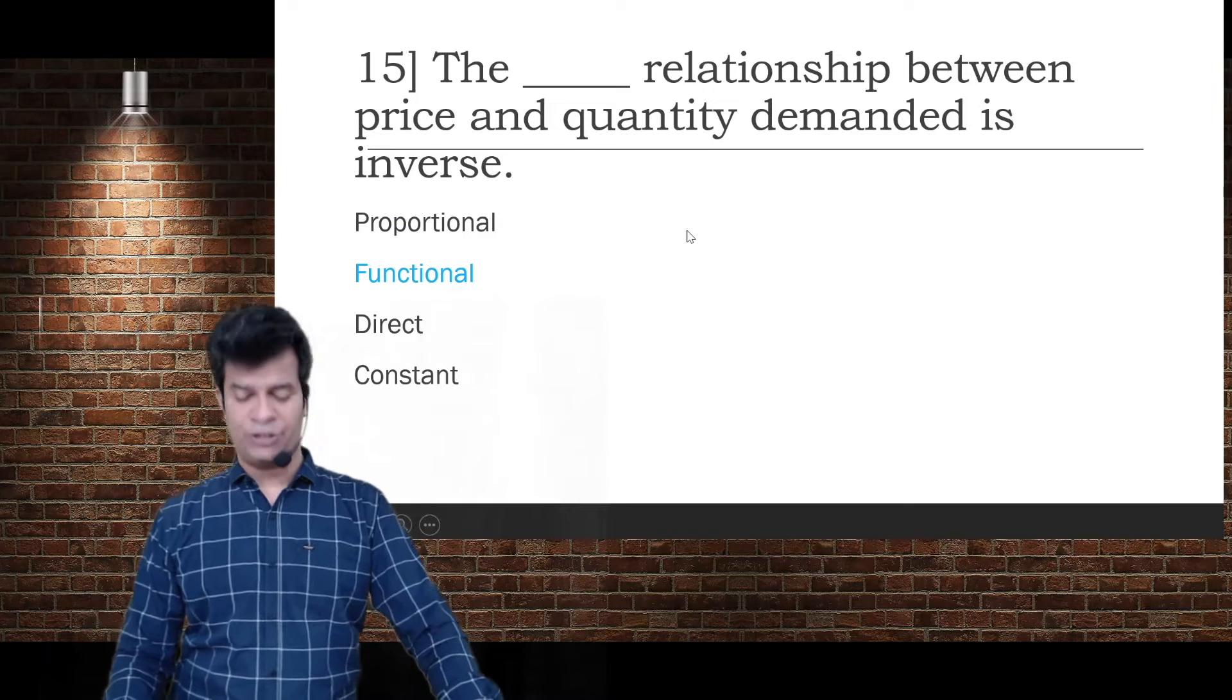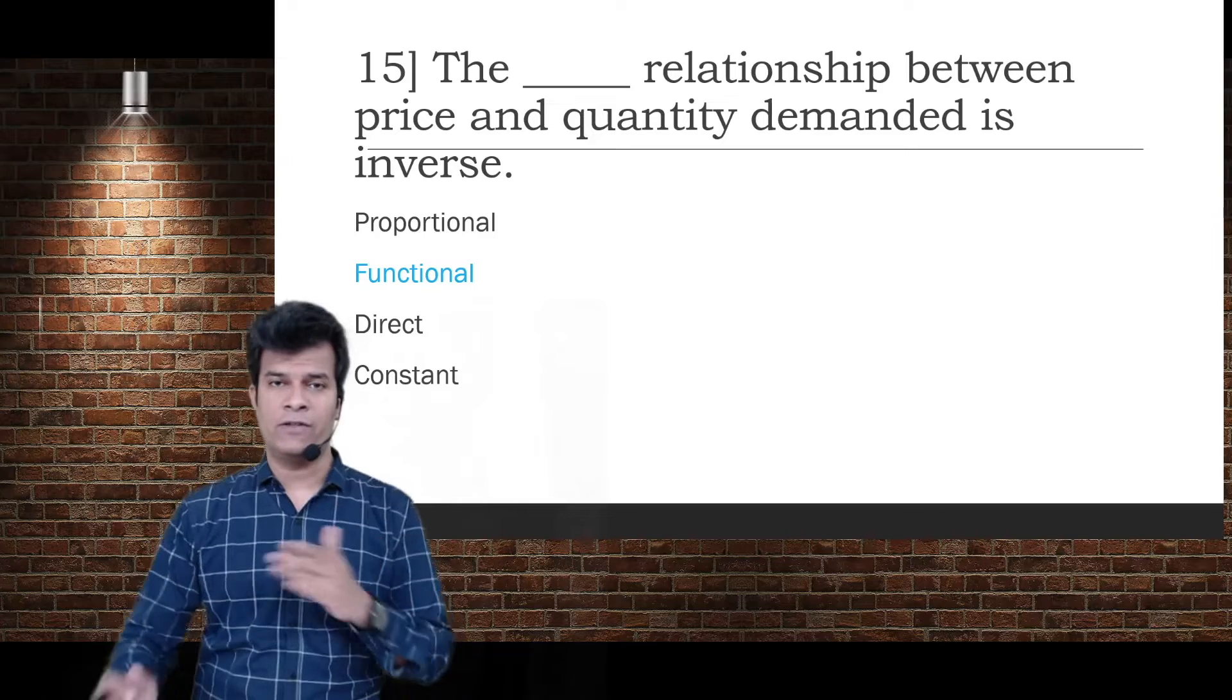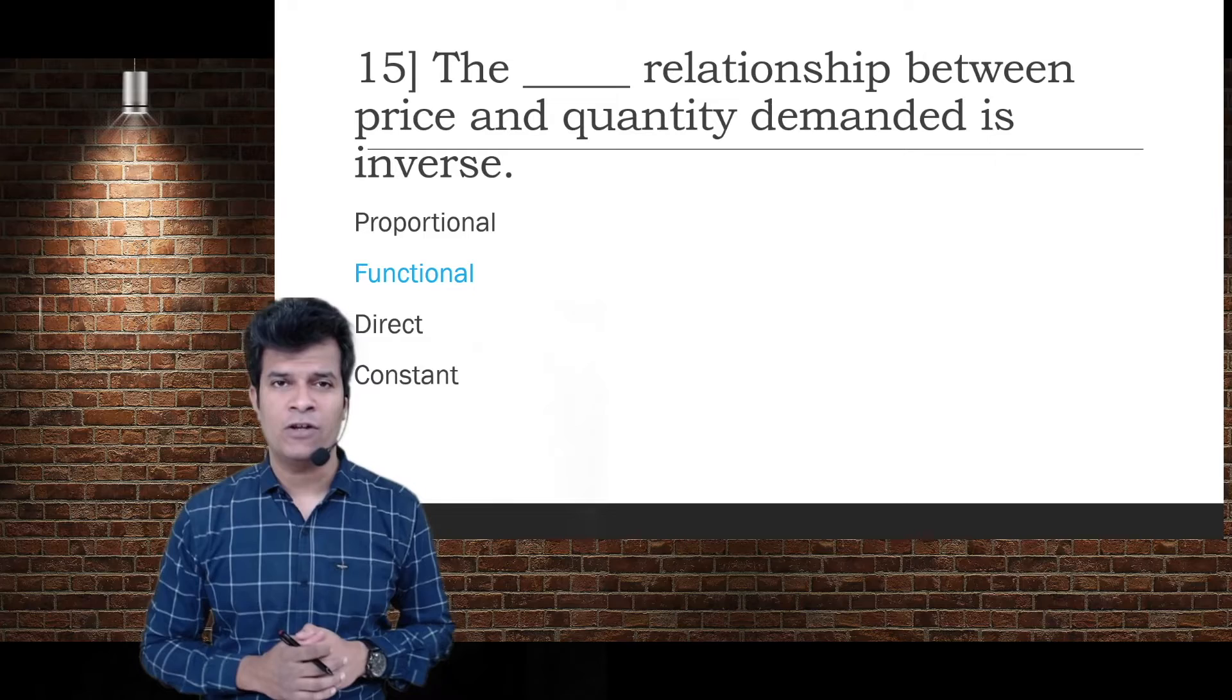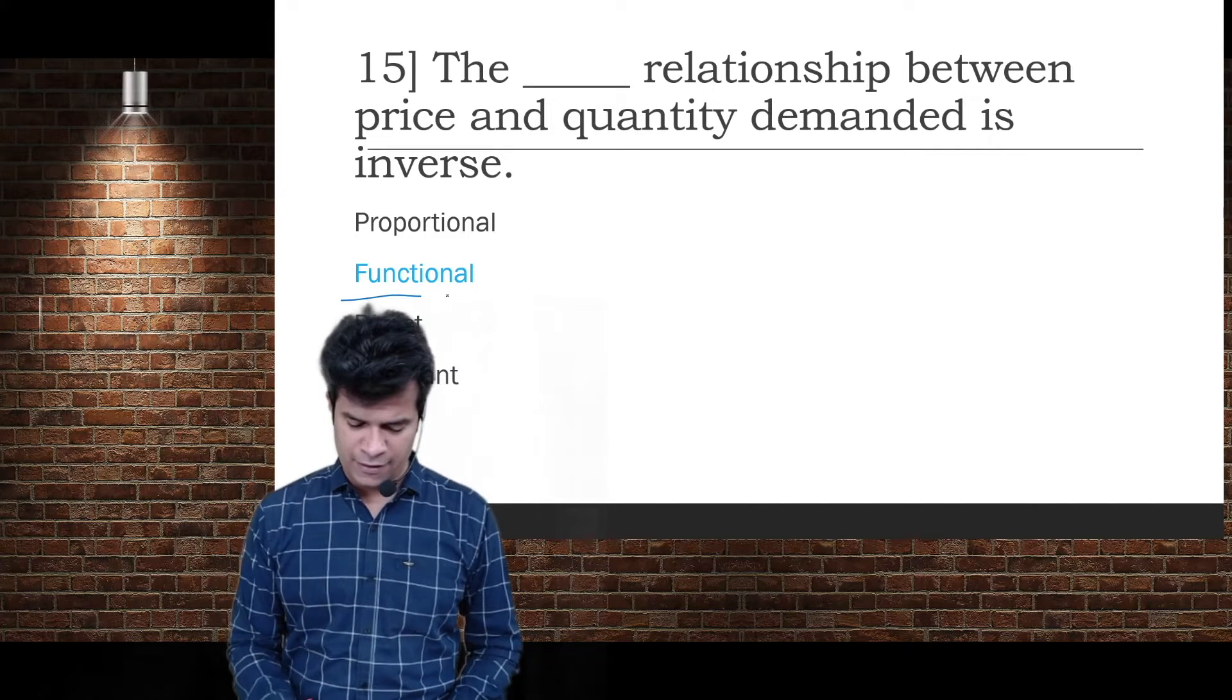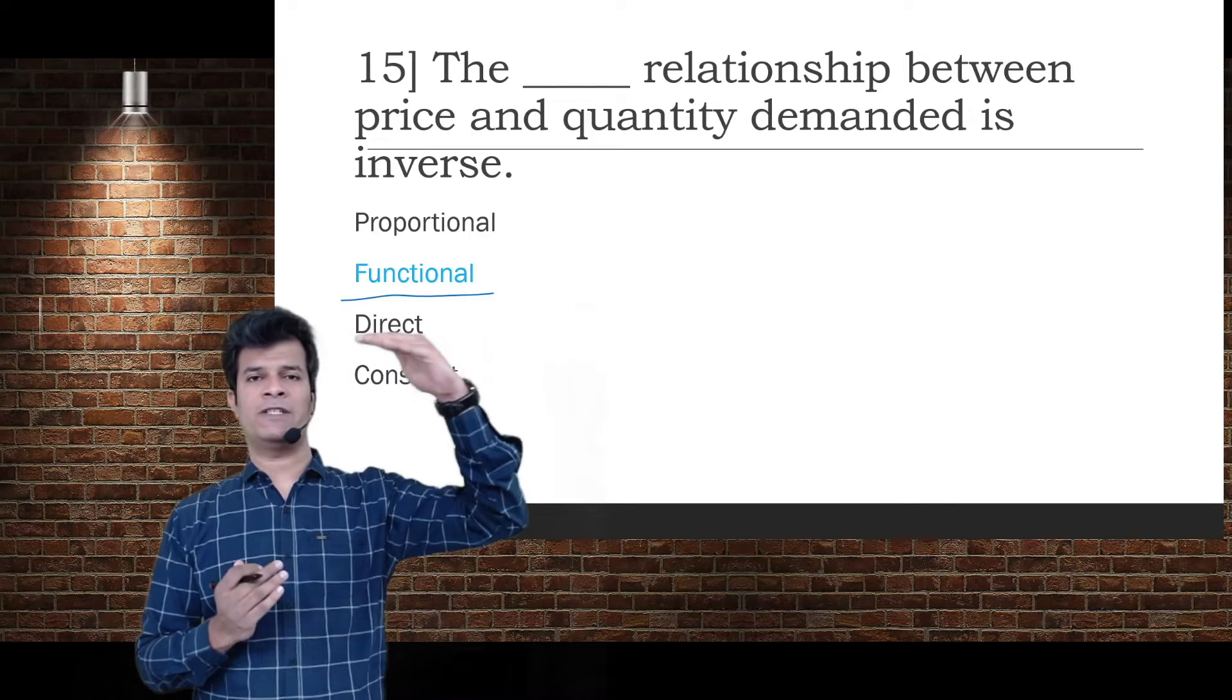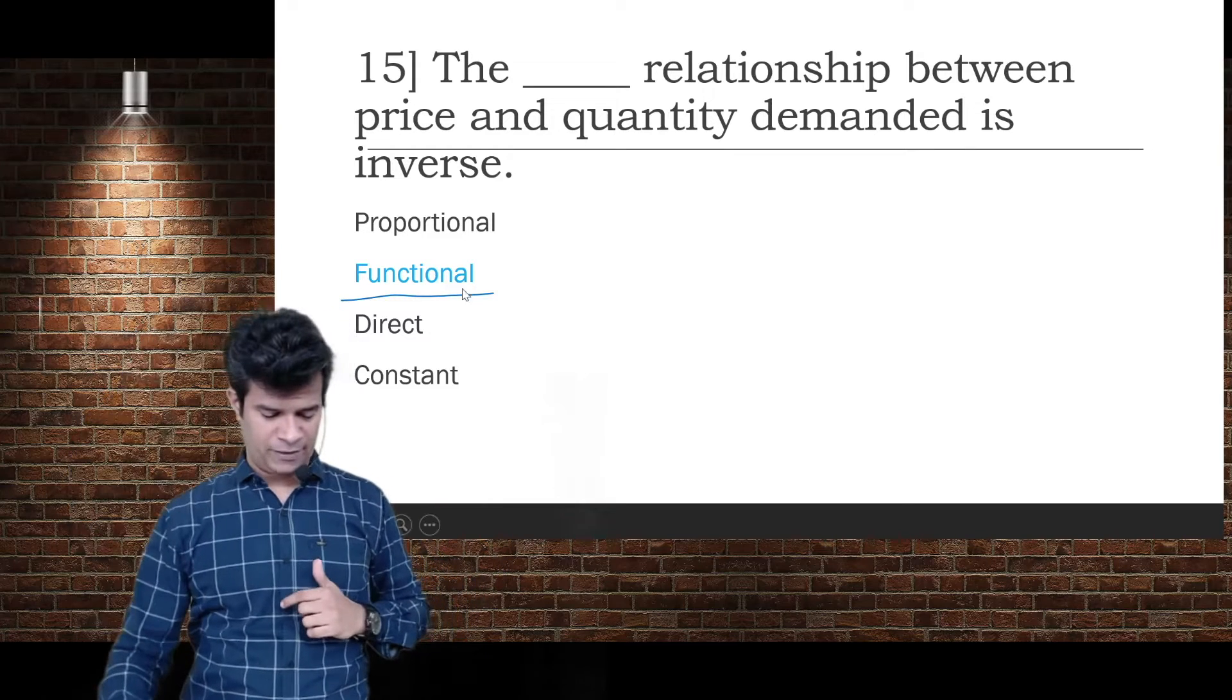The relationship between price and quantity demanded is inverse. What is the relation between price and demand? I've purposefully added this word so it remains in your mind - it is a functional relationship. How it functions: when price goes up, demand comes down. When price comes down, demand goes up.